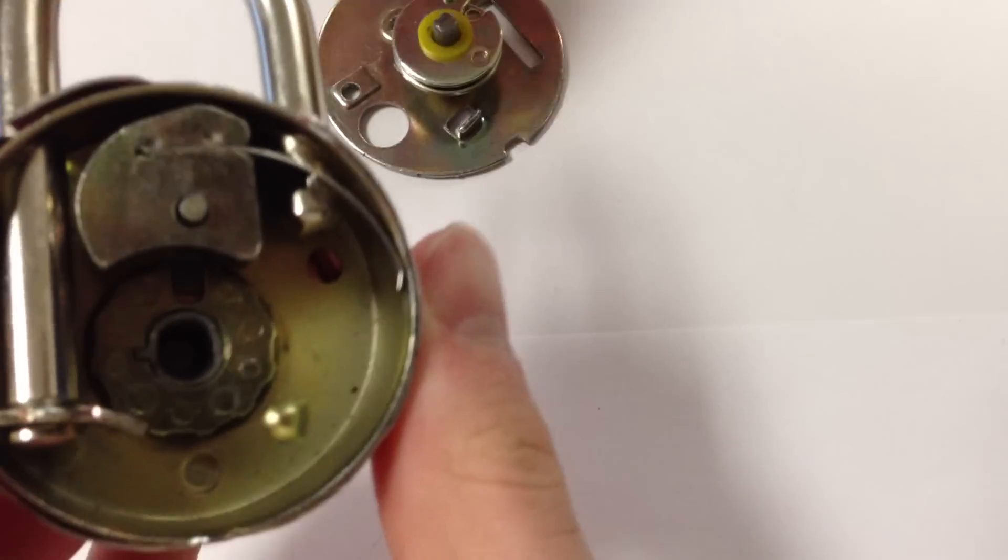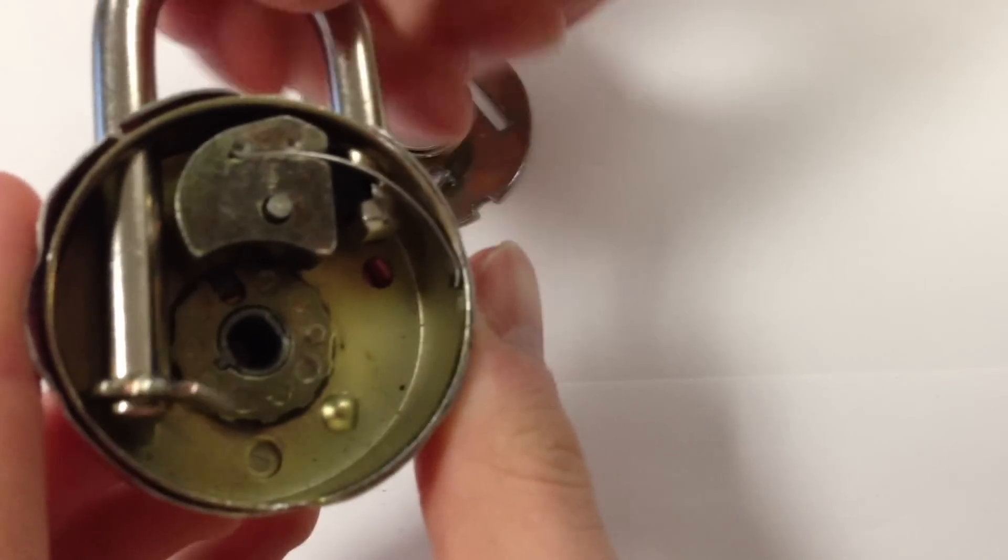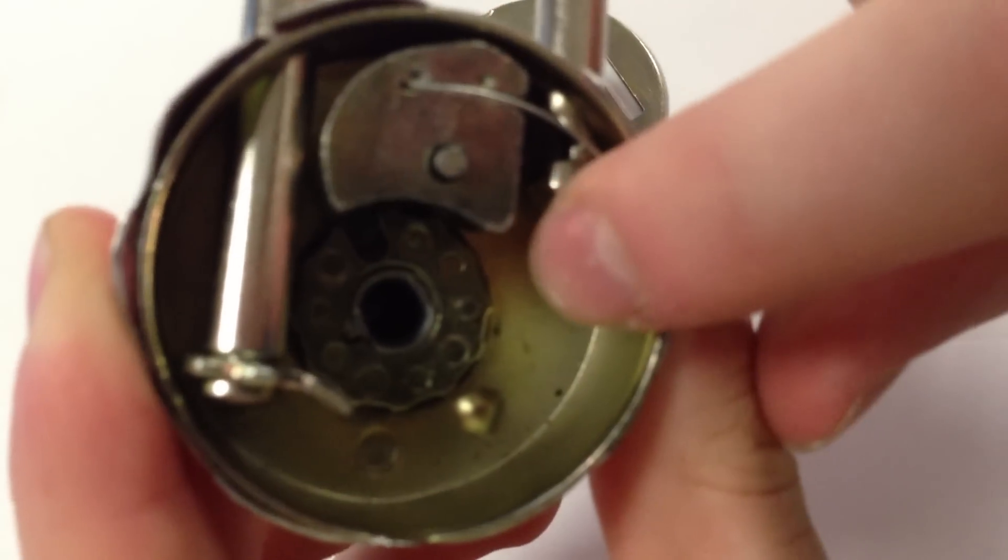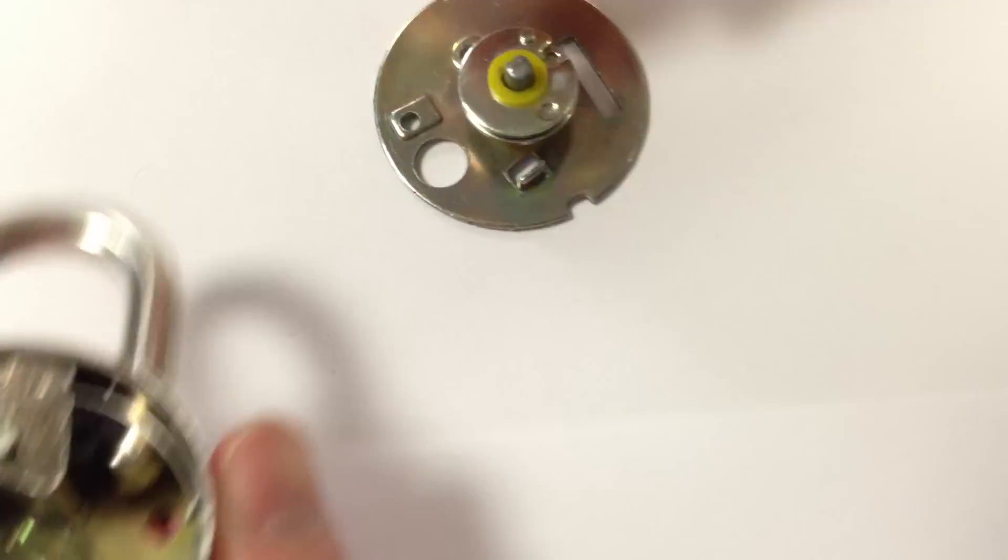In order to spin the three wheels and align the notches, what we have is a simple notch system. Each of these three wheels has a raised piece of metal, as you can see there. Here's that one.